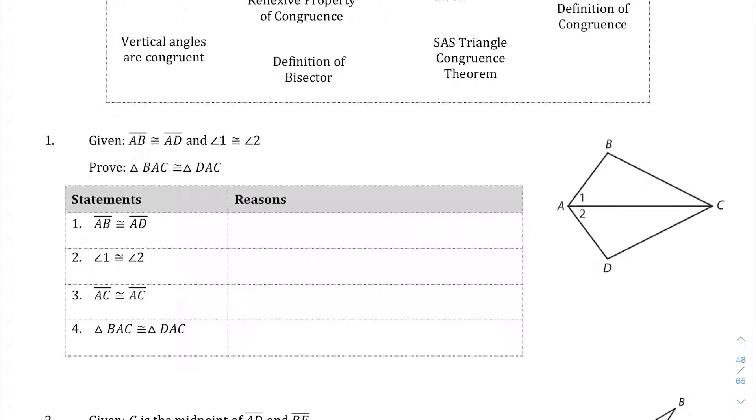So first statement. Side AB is congruent to side AD. So we are told AB is congruent to AD and that is a given statement here. So I'm going to write given here. And angle 1 and angle 2 are congruent. That is also a given statement right here. So I'm also going to write given here.